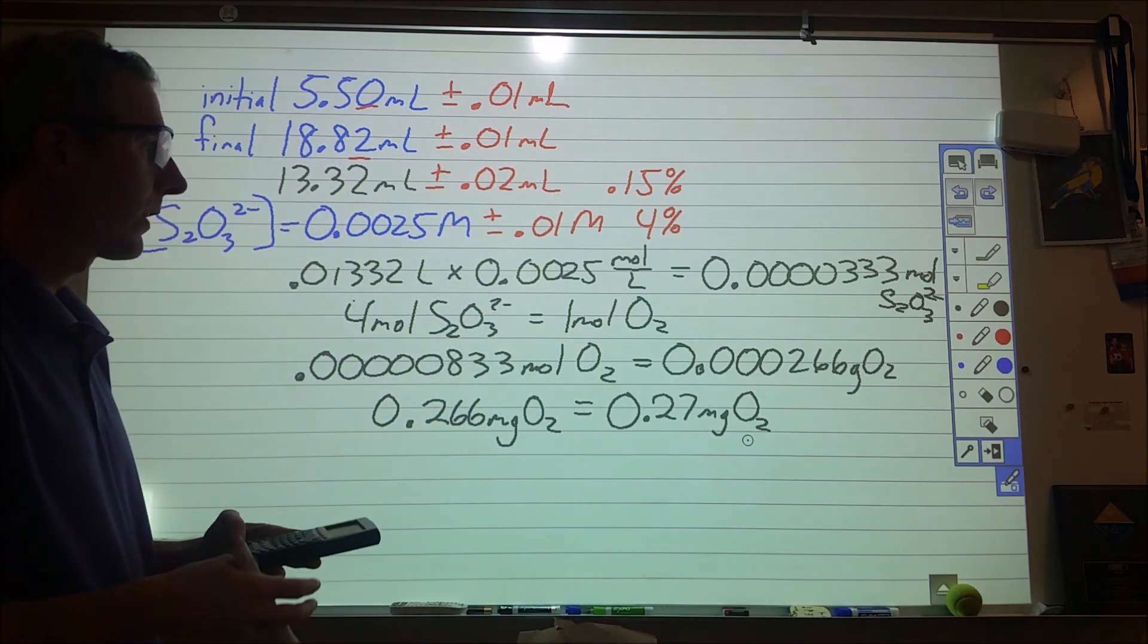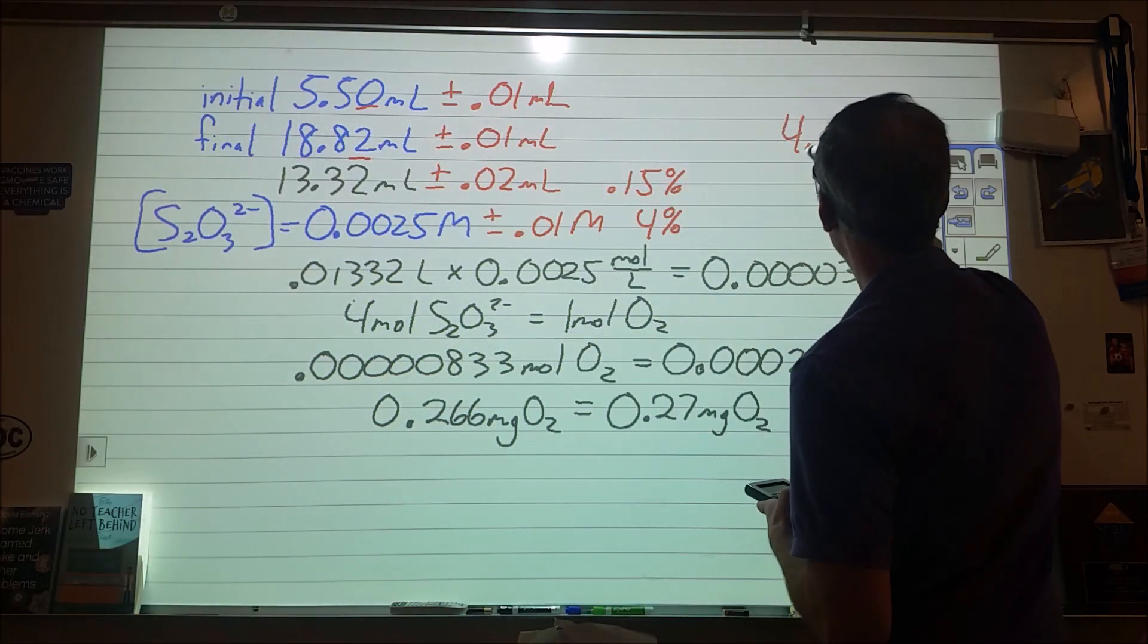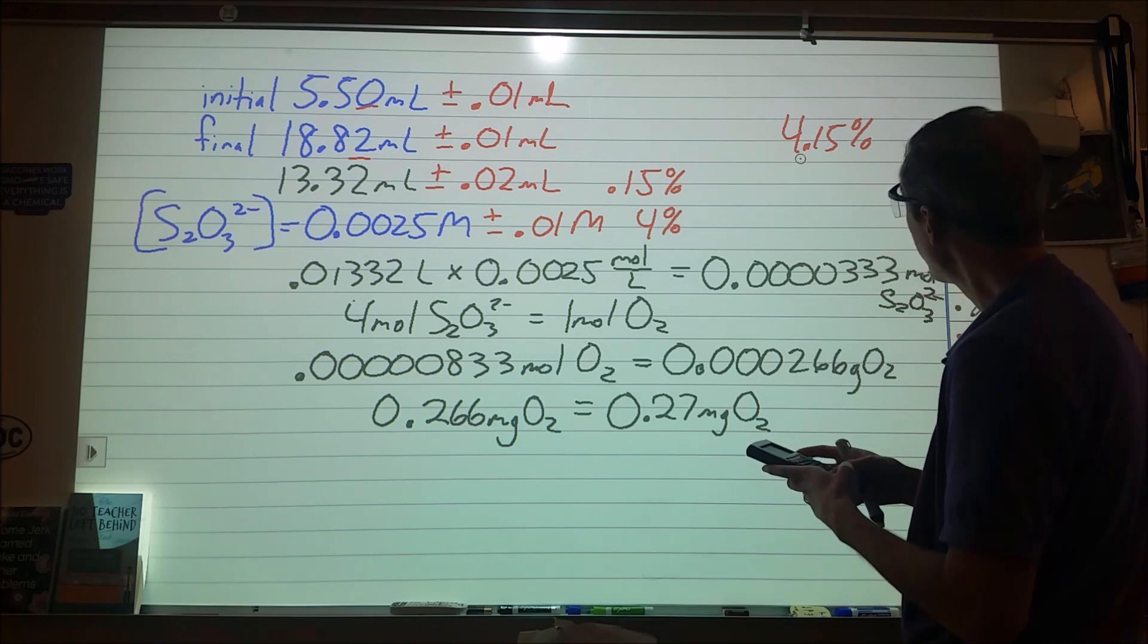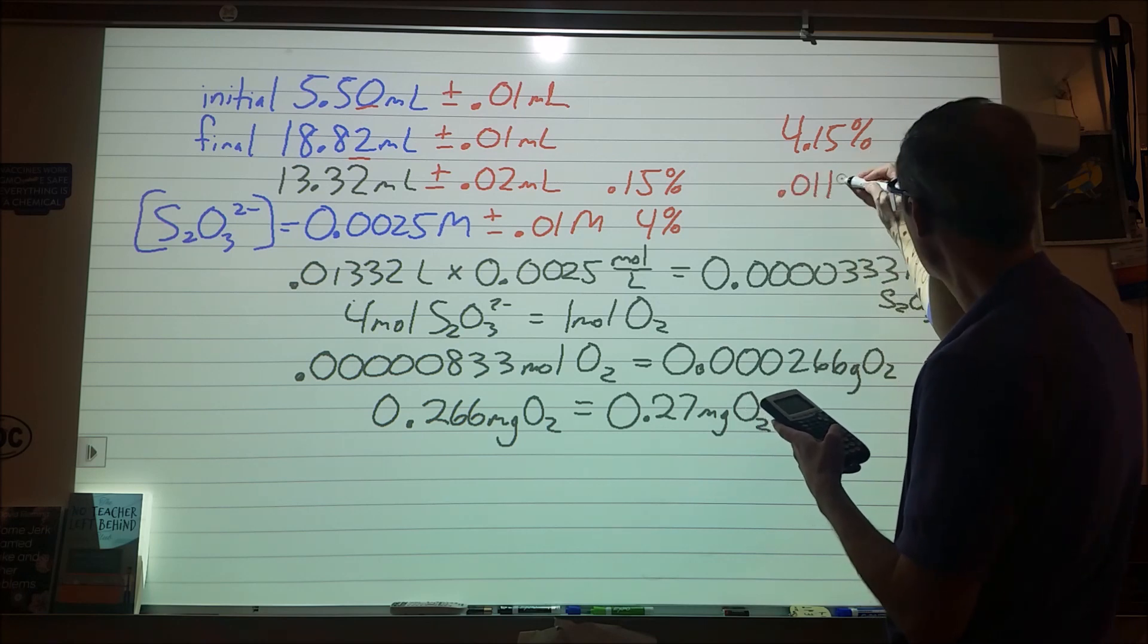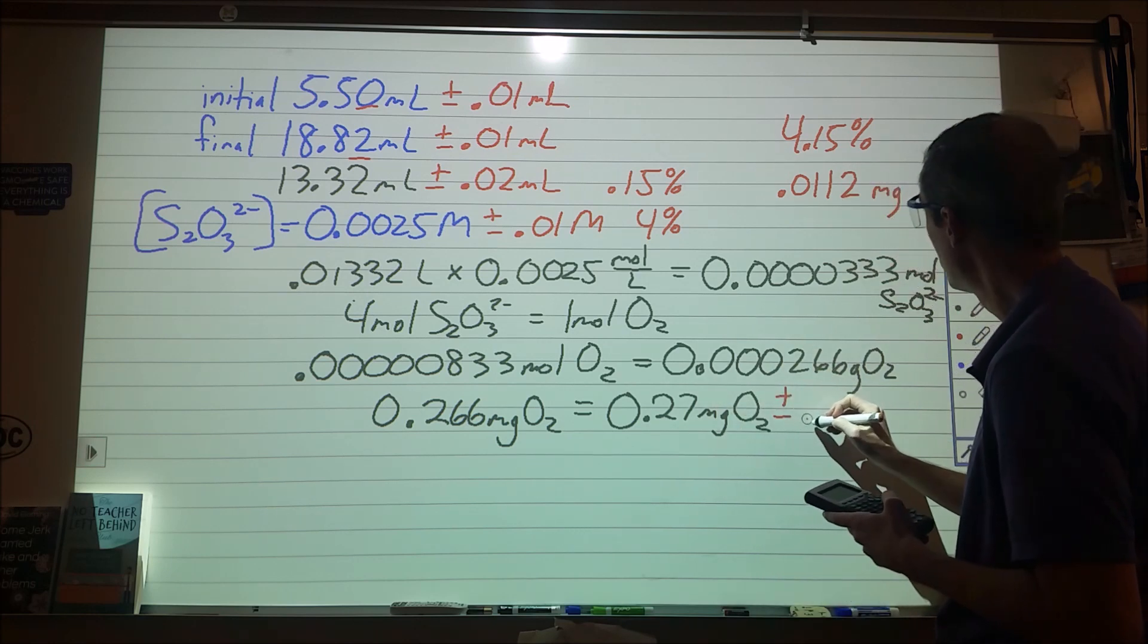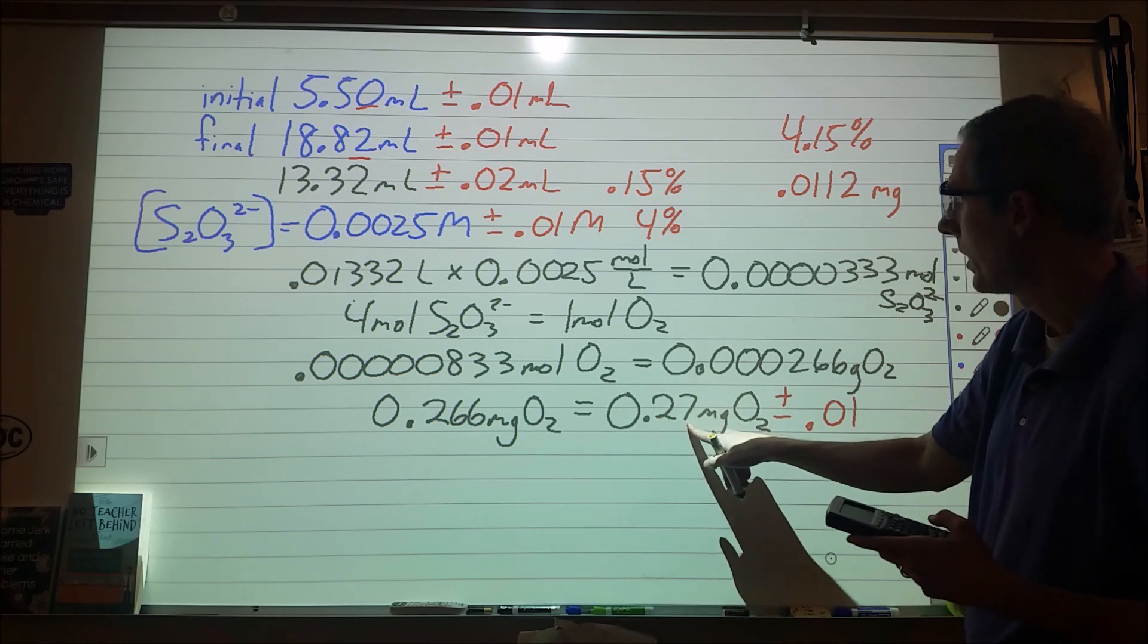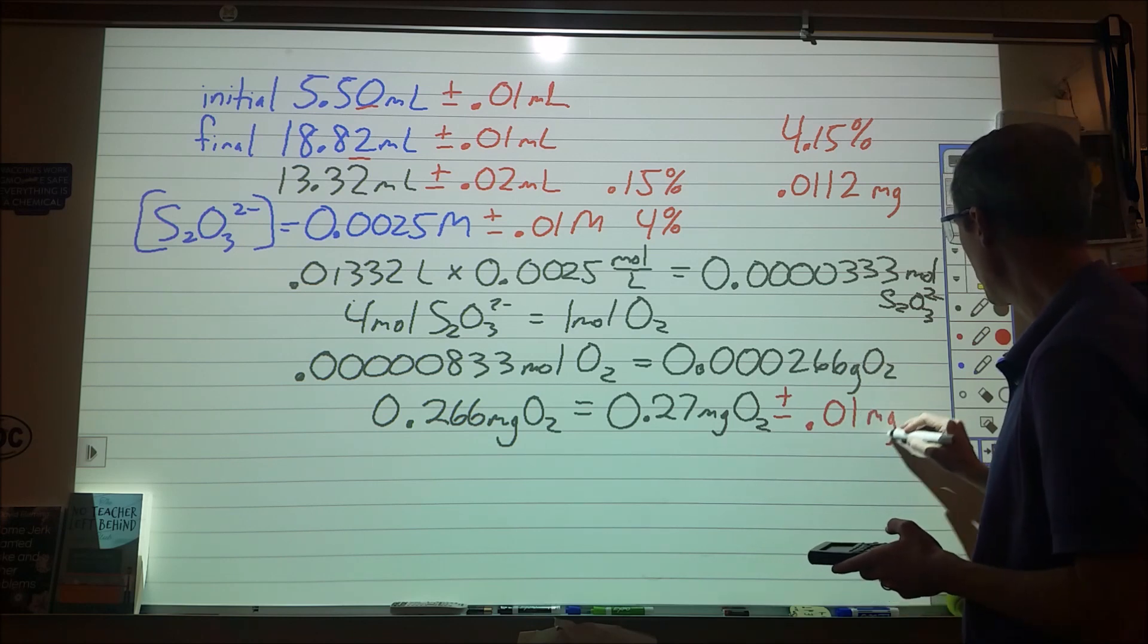The next thing we need to do though is we need to figure out the error. For that we're going to combine these two amounts, so we have 4.15 percent error for this calculation. We're going to multiply 0.27 times that 0.0415, and that comes out to be an error of 0.0112 milligrams. So this value will be plus or minus 0.01. We're going to round that because of the number of sig figs here, so we don't want to go too far beyond the place of this. We're just going to cut that there to keep it consistent with how we reported the error up here.